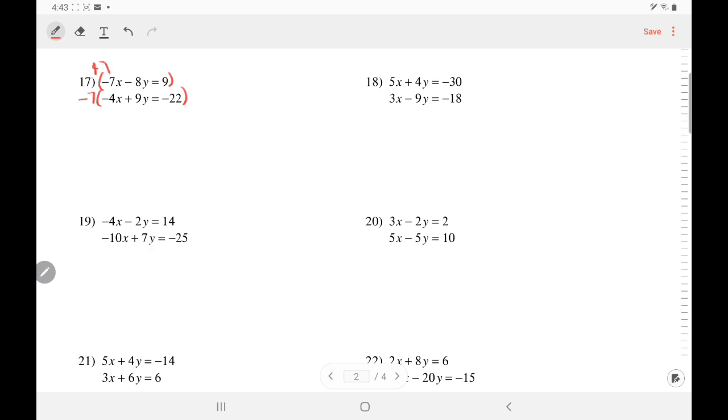So I am going to distribute the 4 to each term. That would give me negative 28x minus 36y equals negative 88. Distributing the negative 7, I will get 28x minus 63y equals positive 154.